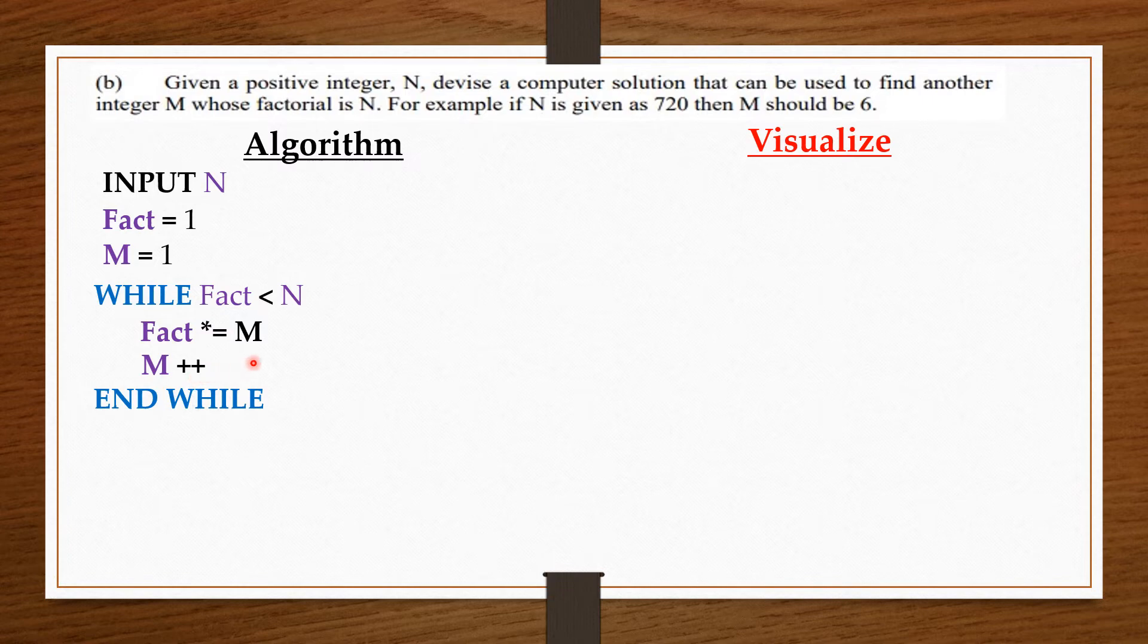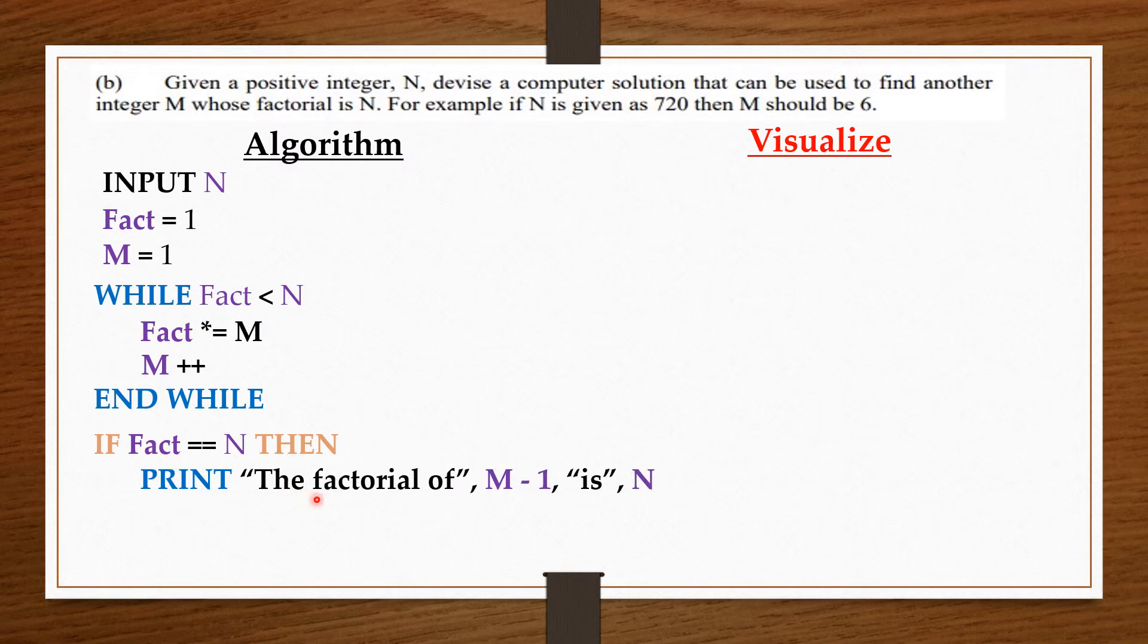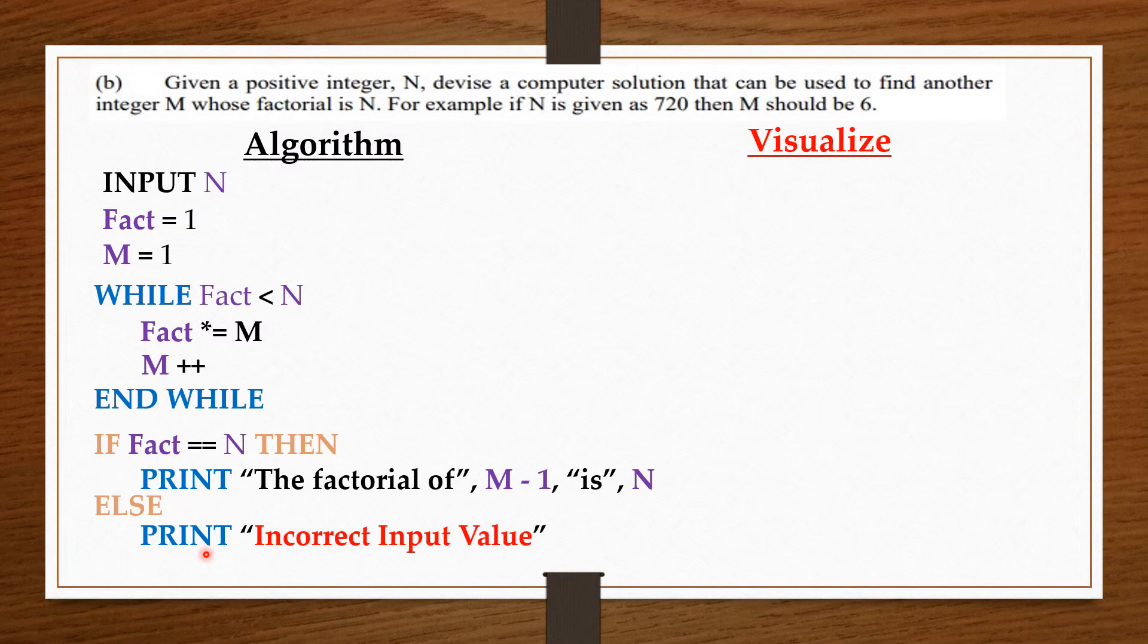So, when we come to the end of the while loop, we say if fact is equal to N, then you should print that the factorial of M minus 1 is N. The reason why we have M minus 1 will also be explained. Because we started M from 1, M will be 1 more than the value of the factorial. That is why we are subtracting 1 back. As we visualize, we will get a bigger picture of this. Else you should print that the value is incorrect and then end if.